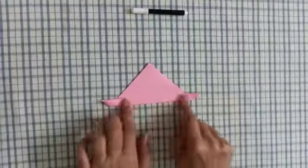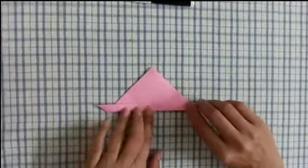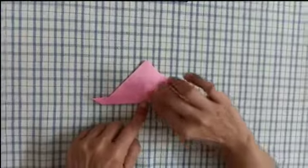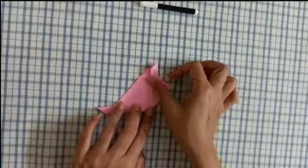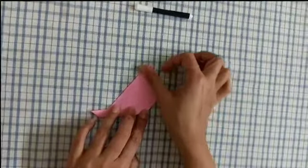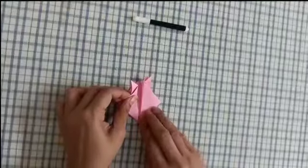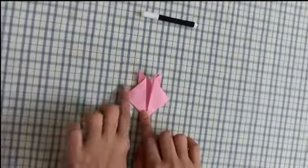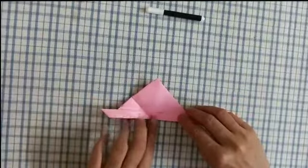It looks like a boat. Now we'll fold it from the middle. Put a finger here and then fold it like this. Do the same from this side as well.